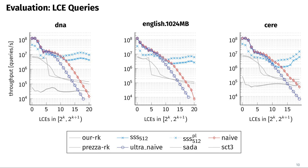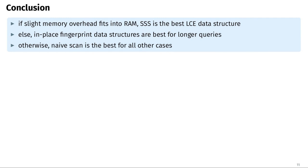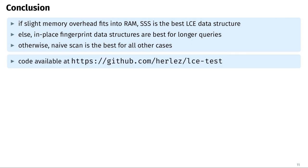In conclusion, despite common belief, there are LCE data structures better than the naive scan approach. When a memory overhead of 10 to 20 percent of the input size fits in main memory, our string-synchronizing set LCE data structure is the fastest available, and tuning tau values and using the prefer-long version can increase throughput significantly. When memory is tight but long LCE queries are expected, the Rabin-Karp fingerprint approaches work in-place. If neither memory overhead nor overwriting the text is acceptable, the naive scan remains the best solution. Our code is available under the BSD license on GitHub — please check it out, and thank you for your attention!